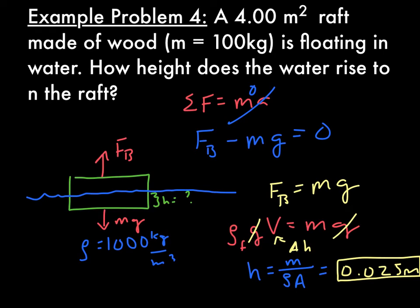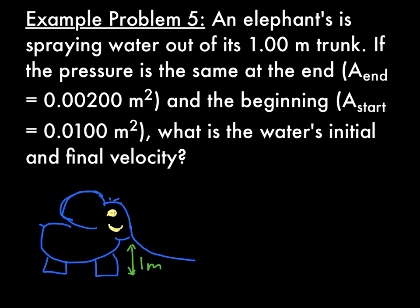So one more problem combining Bernoulli's principle and the continuity equation. First, a little disclaimer about this problem. I have never measured an elephant's nostrils, so these are my best estimates. We're going to assume that the water is going to fall the length of the trunk. The start of the trunk next to the base of the head will be 0.1 square meters. The little nostril where it's going to come spewing out is going to be 0.002 meters. And I made a caveat that the pressure's the same at the end as it is at the beginning.